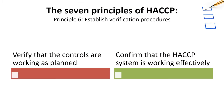Principle 6: Establish procedures for verification to confirm that the HACCP system is working effectively. The HACCP plan must be validated. Once the plan is in place, we need to make sure it is effective in preventing the hazards identified. An effective HACCP system requires little end-product testing and verifies that the controls are working as planned. In addition, a periodic verification of the HACCP system should be conducted.